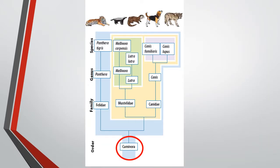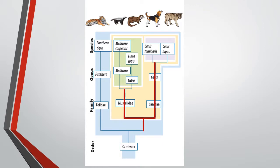It may be easier to think of turning the cladogram on its side, so the order Carnivora is at the base of the diagram, and the rest of the lines are in the shape of a bifocal, like this, this, and this, or these.